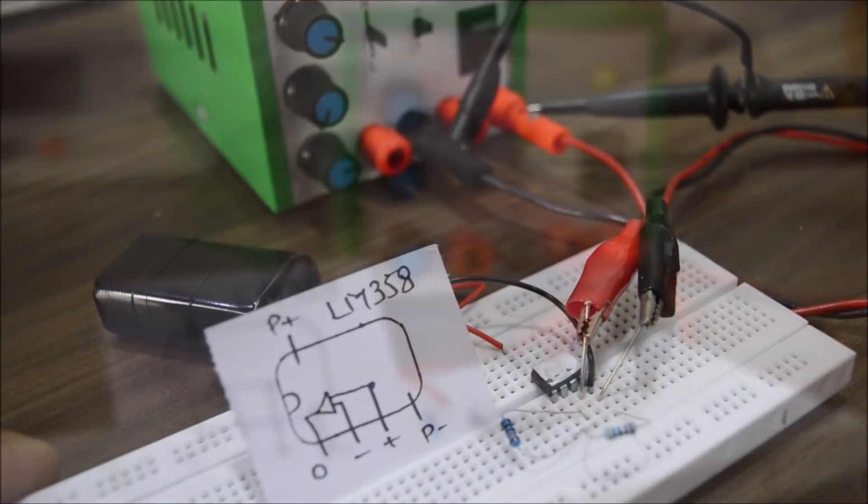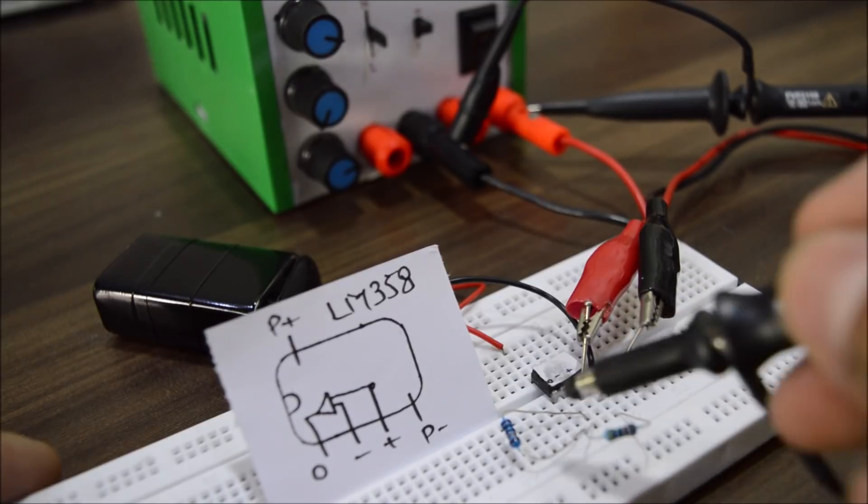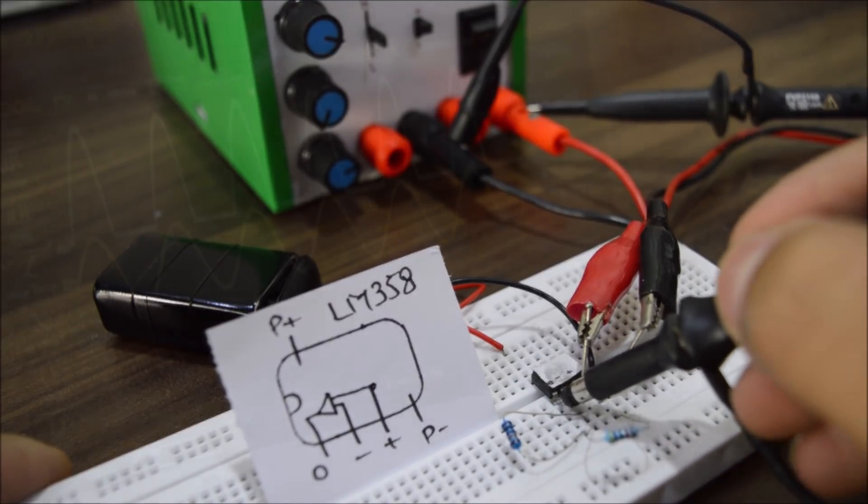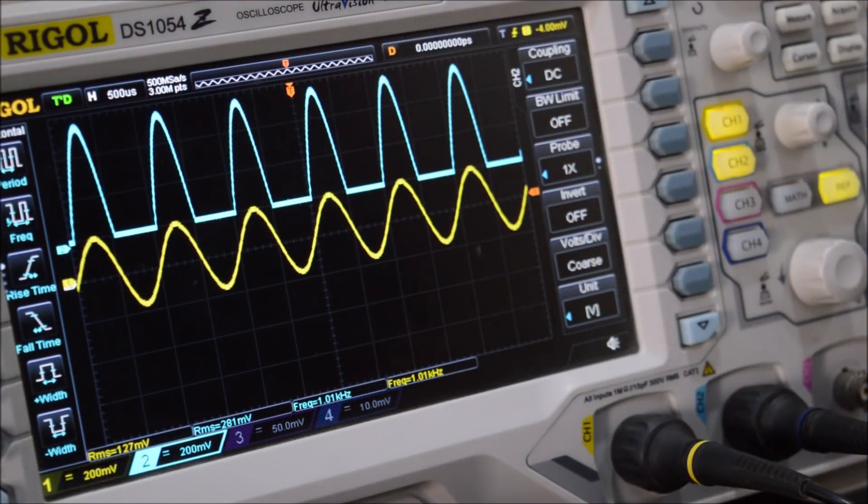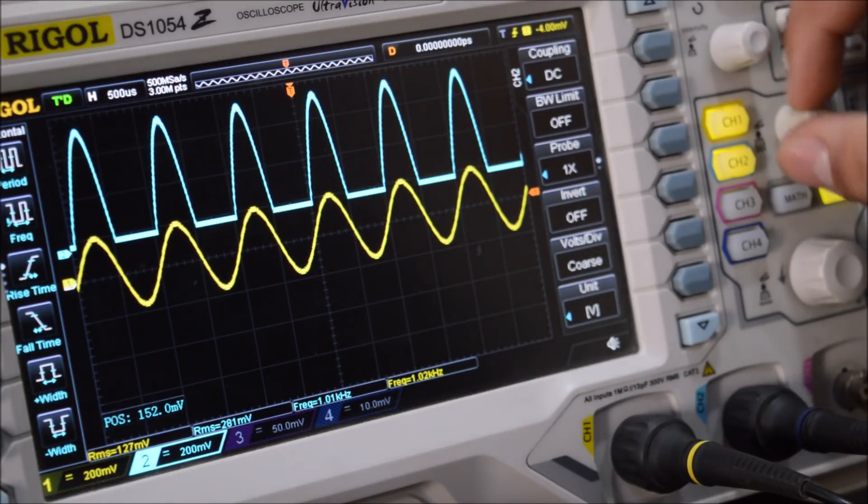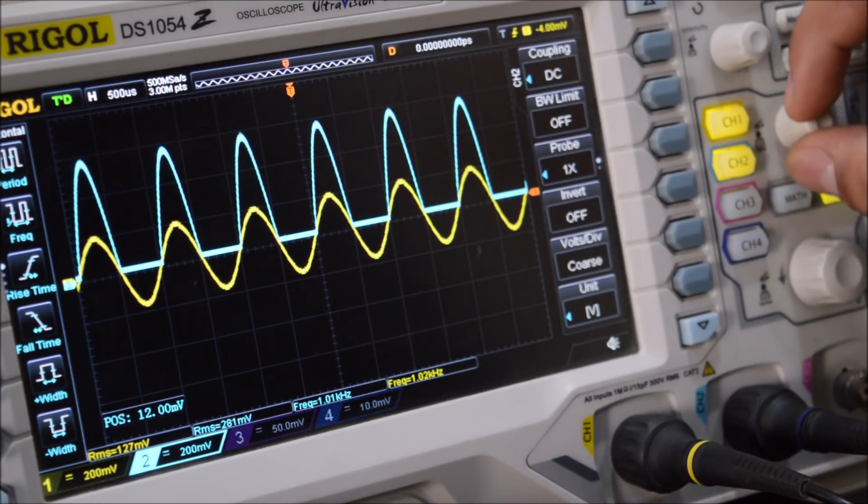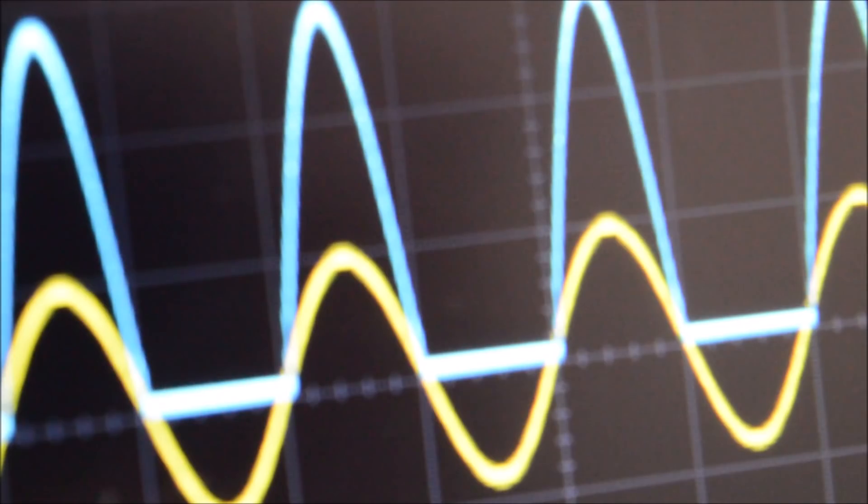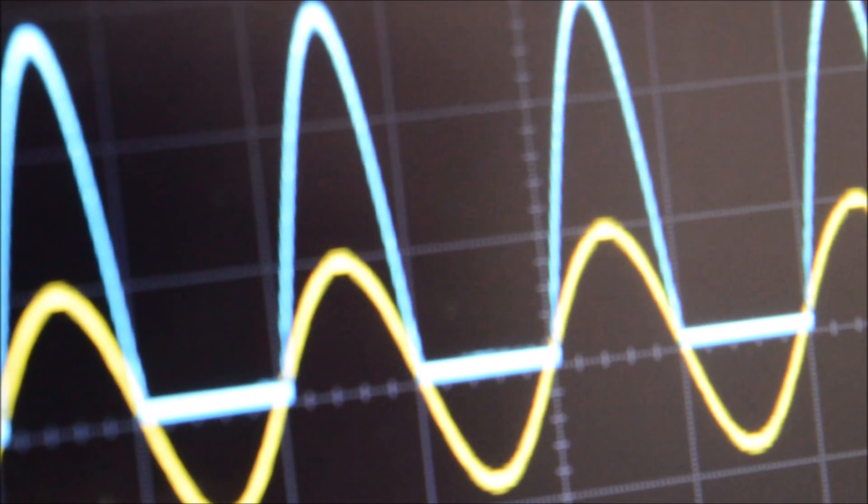So at this stage, if I probe the input and the output of the signal with my oscilloscope, we can see a successful amplification of the input signal. But wait, why the hell are there no negative peaks? It makes sense.